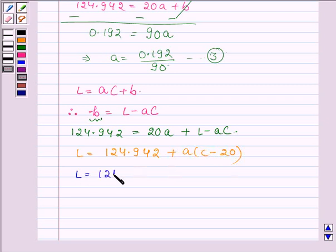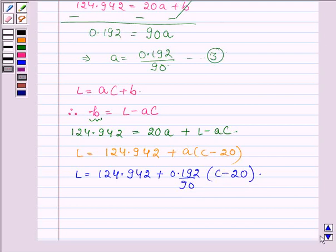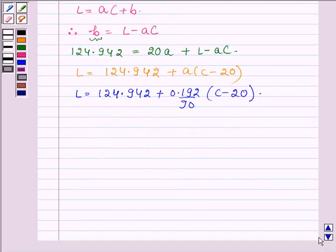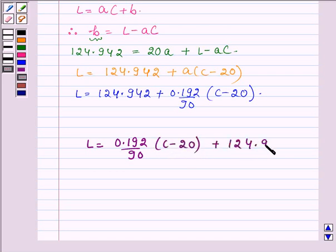Now substituting the value of A, we have L equals 124.942 plus 0.192 upon 90 times C minus 20. Therefore L can be expressed in terms of C as 0.192 upon 90 times C minus 20 plus 124.942.